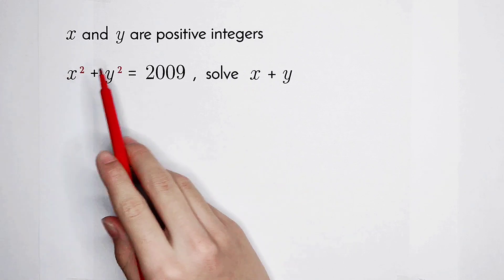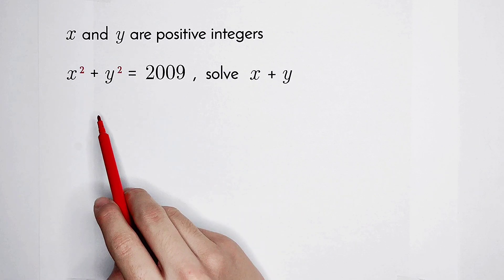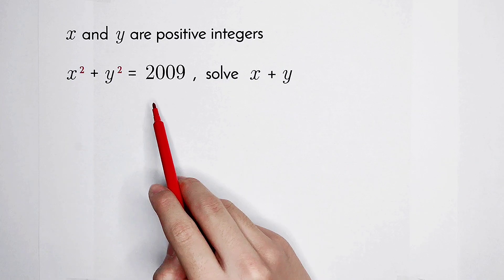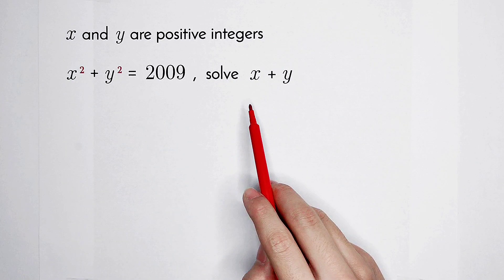Welcome to Math Window. x and y are positive integers. x squared plus y squared is 2009. Solve the value for x plus y.